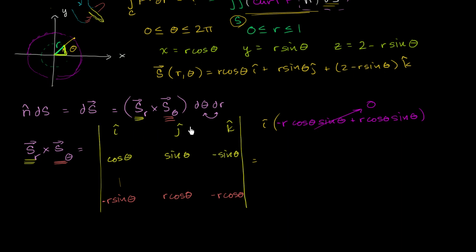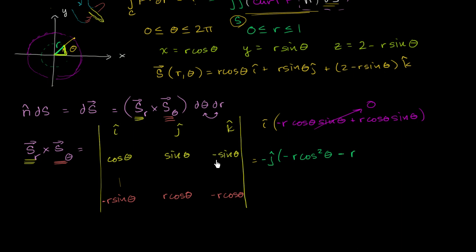For the j component, remember to apply the checkerboard sign pattern, so it's minus j. Ignoring the appropriate row and column: cosine theta times negative r cosine theta gives negative r cosine squared theta, and we subtract negative r sine theta times sine theta, which gives plus r sine squared theta. Distributing the negative sign, all terms become positive: r cosine squared theta plus r sine squared theta.